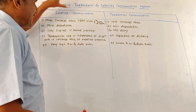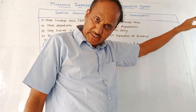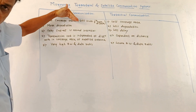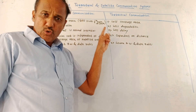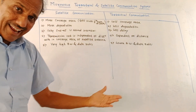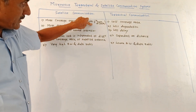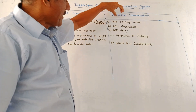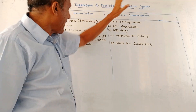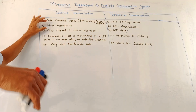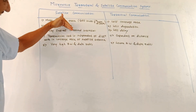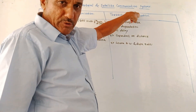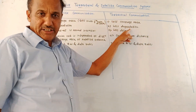Next is a comparison between satellite communication and terrestrial communication systems. As far as satellite communication is concerned, it provides more coverage area — for example, a GEO satellite with a single antenna can cover one-fourth the area of the earth — whereas terrestrial communication gives less coverage area. In terms of transmission data, there is more degradation in satellite communication, whereas terrestrial communication has less data degradation.